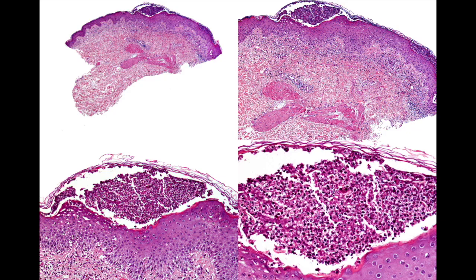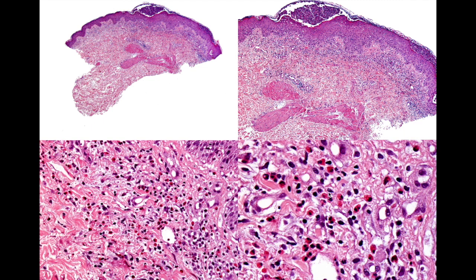A biopsy was done as well, and the histopathological analysis showed subcorneal pustules with a rich infiltrate of eosinophils in the papillary dermis and around the blood vessels, as you can see in these images. Finally, a diagnosis of acute generalized exanthematous pustulosis was made.